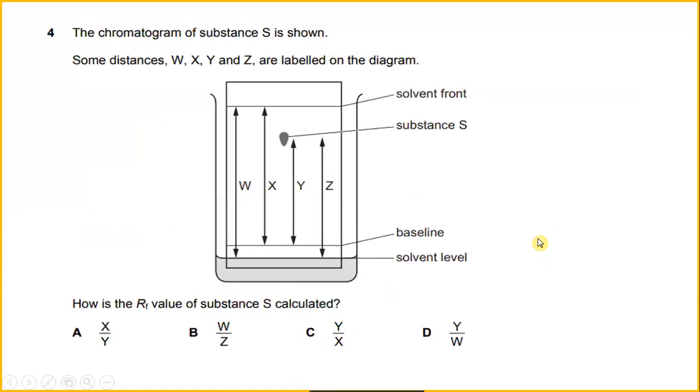The chromatogram of substance S is shown. Some distances W, X, Y, and Z are labeled on the diagram. How is the R value of substance S calculated? So in this case, you want to get the value of R. So R is a distance from baseline to center of spot. Basically, we can have Y and the distance of solvent from the baseline. So this is the distance of solvent from the baseline. So basically, Y divided by X. So the answer will be C.